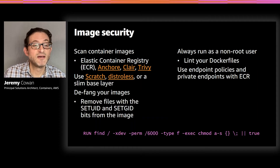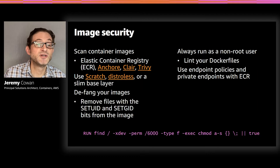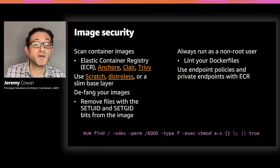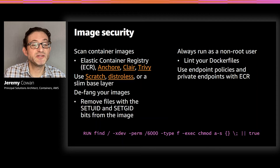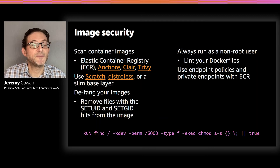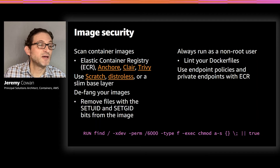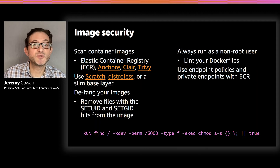Another thing to do is avoid running your application within your container as root — that is the default, so it's a good idea to check for the USER declaration in your Dockerfiles. Tools like Hadolint and Dockerlint can be used to lint those files. Finally, use endpoint policies and private endpoints with ECR to prevent containers from being used to exfiltrate data outside your organization. By creating endpoint policies, you can restrict the accounts to which ECR images can be pushed.